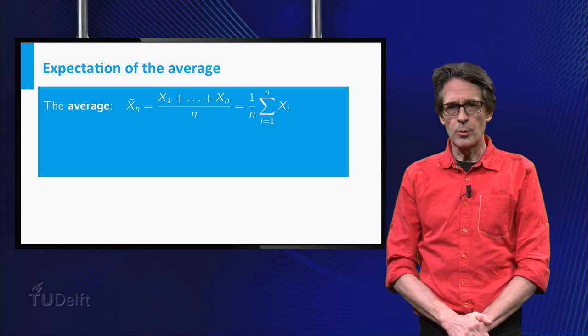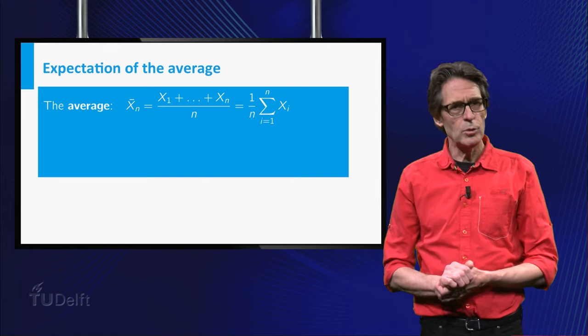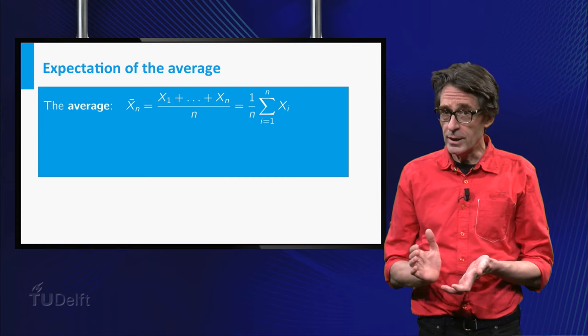In a measurement example, the random variables xᵢ are the individual measurements. It is quite something to assume identical distributions and independence. How would you guarantee this in practice?